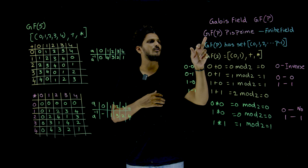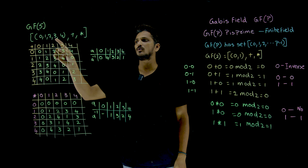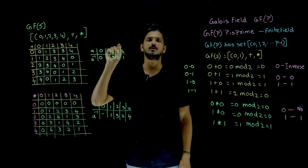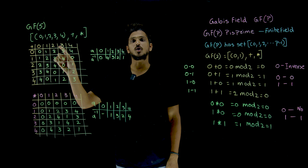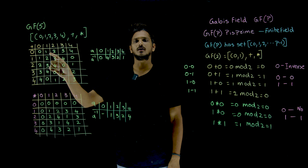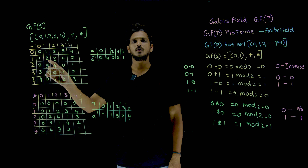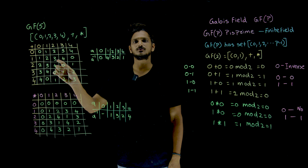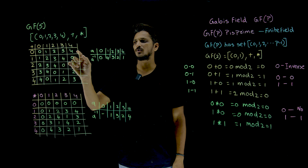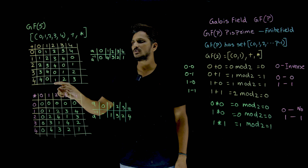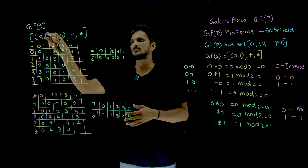Let us now understand GF(p) fields with one more example: GF(5). The elements present in GF(5) are 0, 1, 2, 3, 4. The operations are plus and multiplication. We will explain a few: 0 plus 0 is 0, modulus 5 is 0. 0 plus 1 is 1, modulus 5 is 1. 1 plus 1 is 2, modulus 5 is 2. 1 plus 2 is 3, modulus 5 is 3. 1 plus 3 is 4, modulus 5 is 4. 1 plus 4 is 5, modulus 5 is 0. You are getting values present in the set — it satisfies closure property.